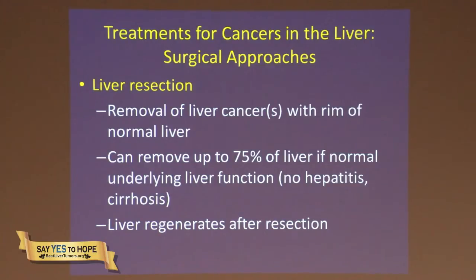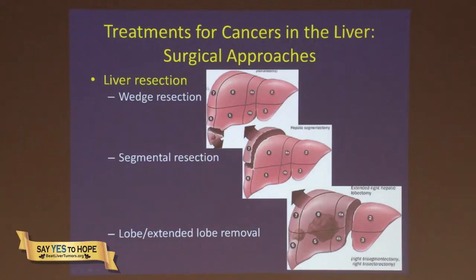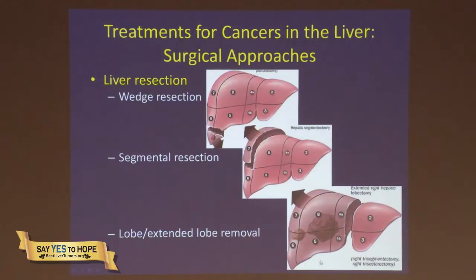Options for liver resection include wedge resection for peripheral tumors, segmental resection removing just one segment, or lobectomy removing the right or left side of the liver. Even though the liver looks homogeneous, it has different segments. For example, with two tumors, we can do an extended lobectomy — removing a large portion while leaving segments two and three, which, if the underlying liver function is healthy, will support life and allow the liver to regenerate.